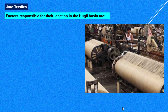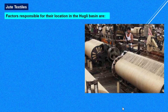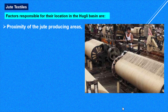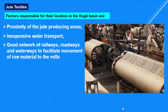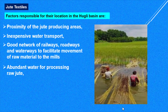The factors responsible for the location of jute textile industries in the Hugli basin are: first, proximity of jute producing areas — jute is produced around the Hugli river. Next is inexpensive water transport, which is the cheapest mode of transport because fuel required is less and the waterway is naturally available with hardly any maintenance required. There is also a good network of railways, roads, and waterways to facilitate the movement of raw material to the mills.